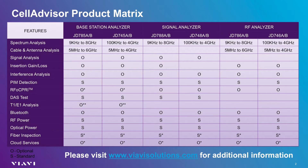The JD740B and the JD780B are the most full-featured versions of the Cell Advisor platform. While the JD740B series is more focused on RF tasks and signal analysis, the JD740B series operates up to 4 GHz and the JD780B series operates up to 8 GHz. This video is created using the JD780B.